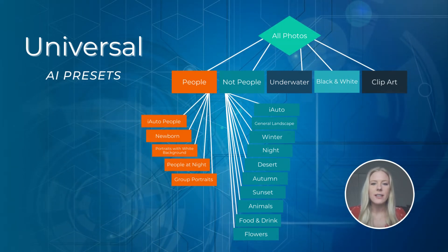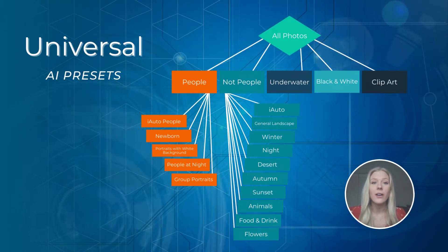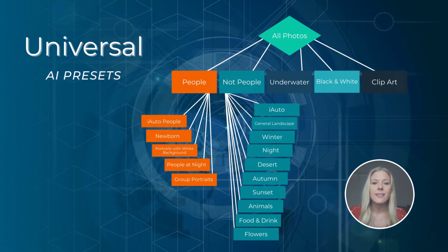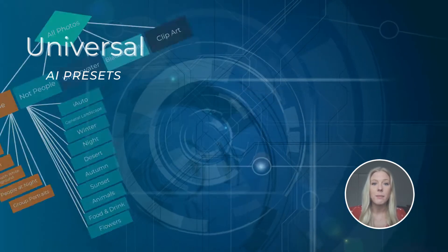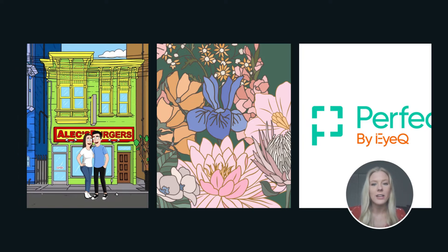Each category and subcategory gets its own targeted correction applied, with the exception of the last category: clipart. Clipart drawings and cartoons are detected, categorized, and skipped, meaning these don't receive any correction.